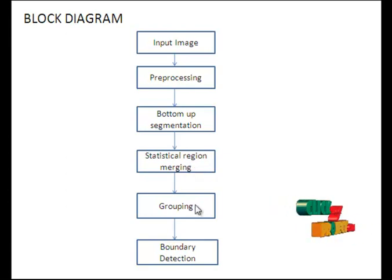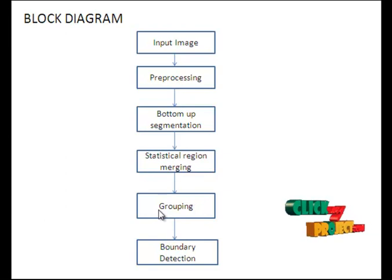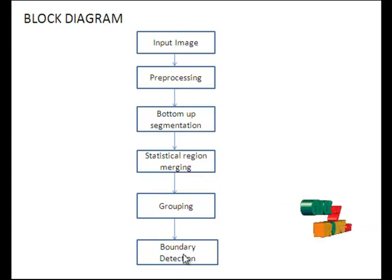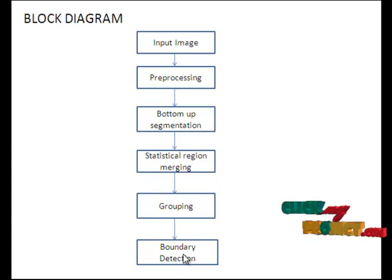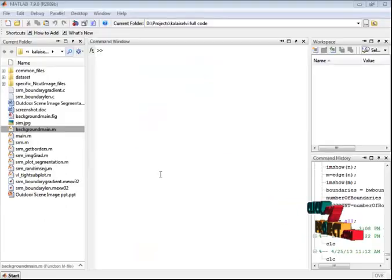After grouping, the images are passed to boundary detection. In boundary detection, it finds the boundary of the given image based on a breadth-first search strategy. Now let's see the execution part.